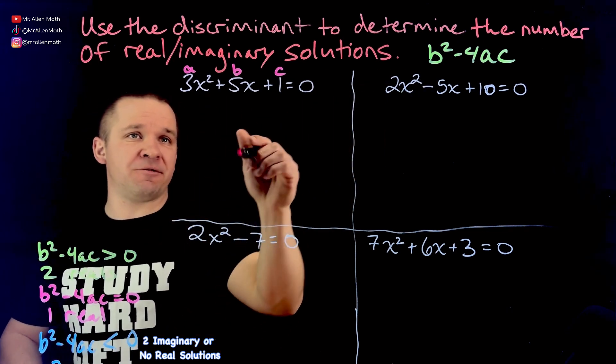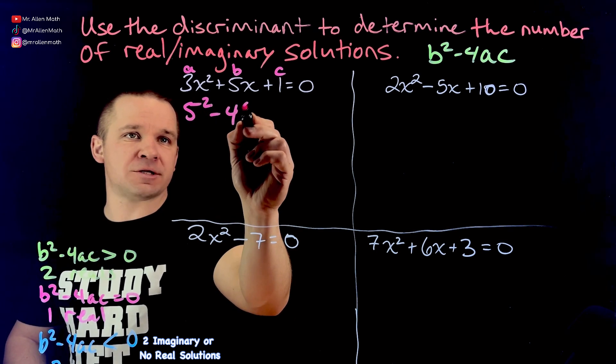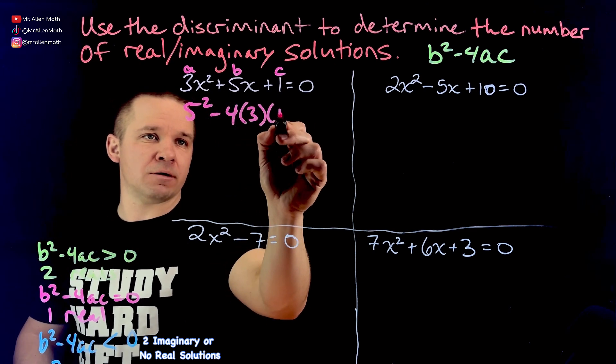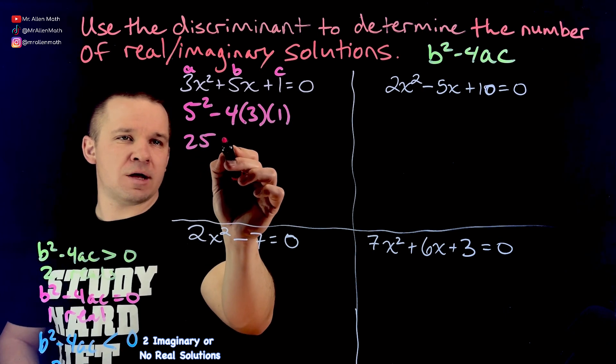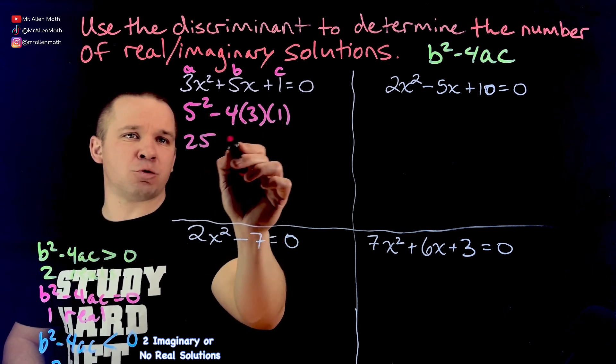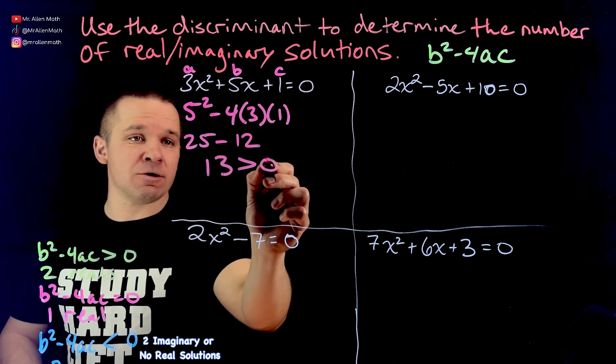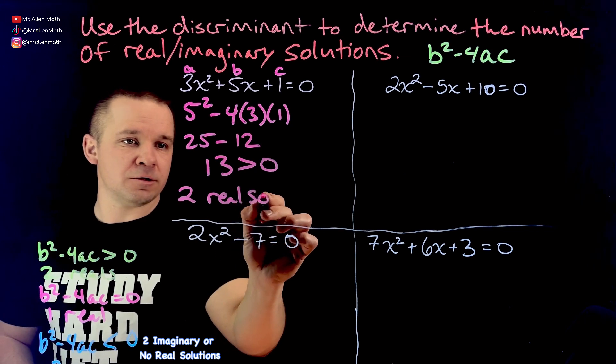So B squared, that's going to be 5. So 5 squared minus 4 times, A is 3, C is 1. So we've got 25. And then we have 4 times 3 times 1. That's 12. So minus 12. This is going to be 13. That is greater than 0. Thus, we have two real solutions.